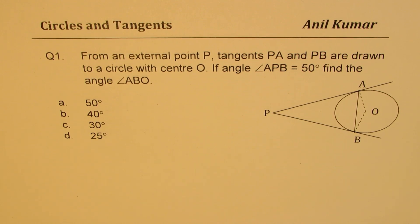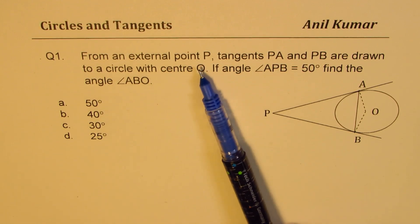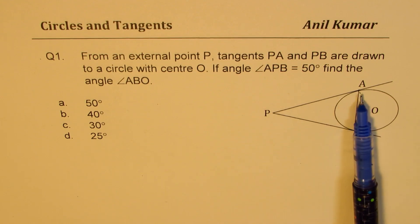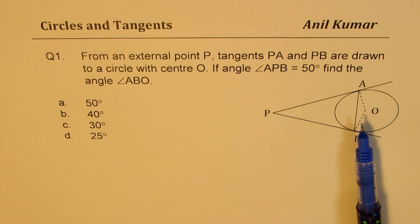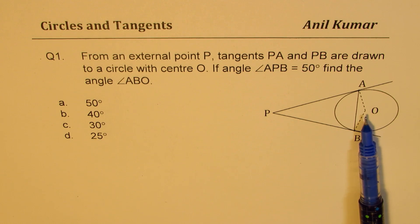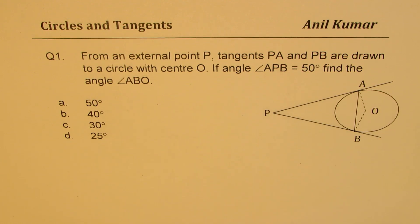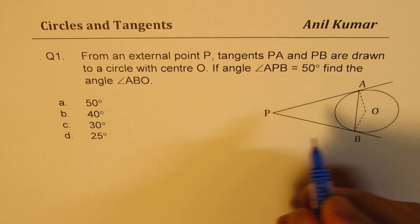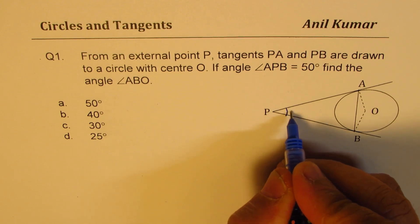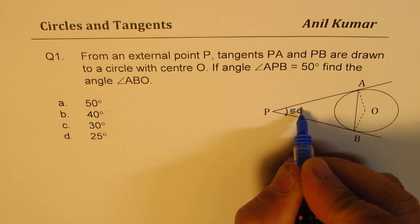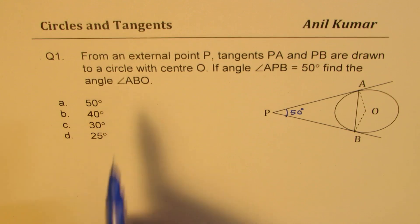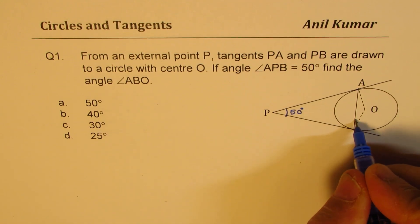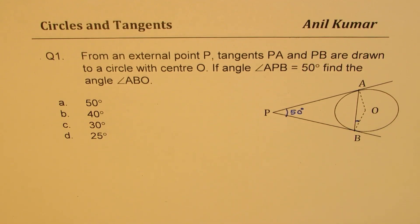Question number one. From an external point P, tangents PA and PB are drawn to the circle with center O. If the angle APB equals 50 degrees, find the angle ABO. Four choices are given to you.